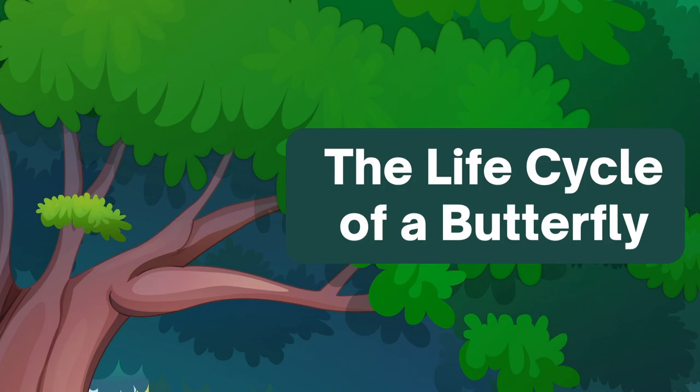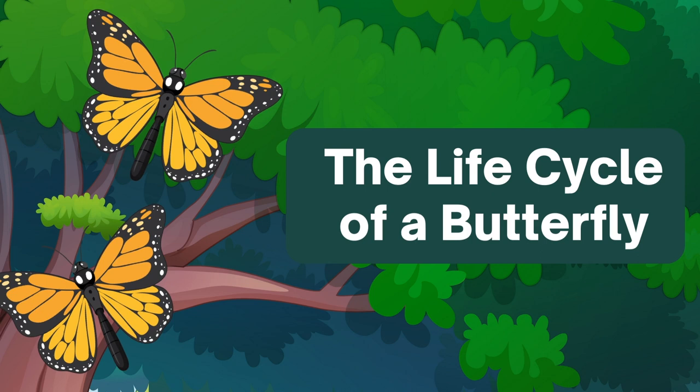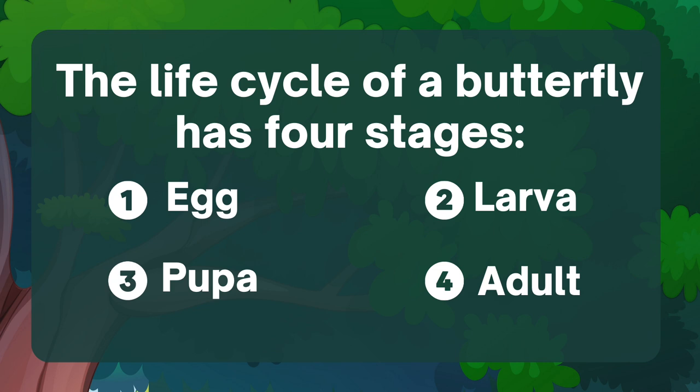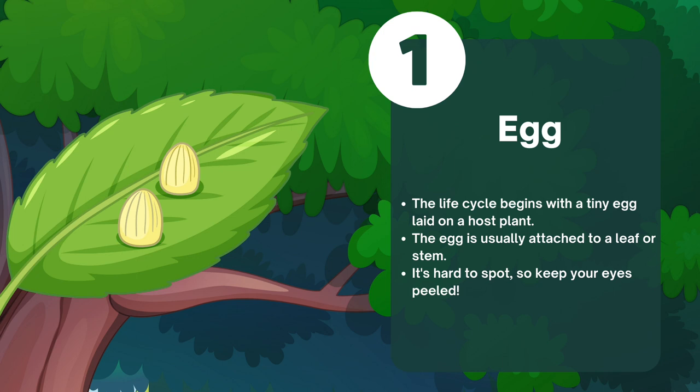Welcome to the presentation on the fascinating butterfly life cycle. Today we will explore the remarkable transformation that butterflies undergo from egg to adult. The life cycle of a butterfly consists of four stages: the egg, larva, pupa, and adult.